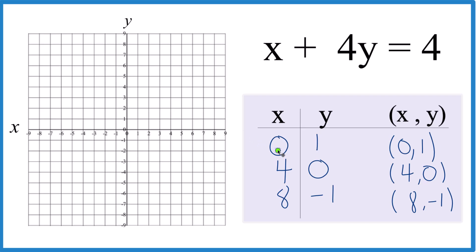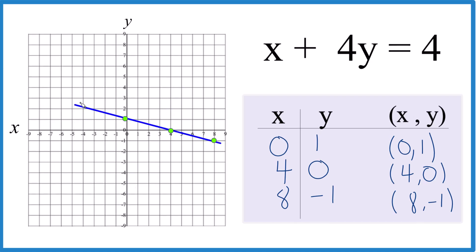We have x is zero, y is 1 right there. We have x is 4 and y is 0. There it is. And one more, x is 8 and y is negative 1 right there. You can see they line up. Let's put a line through that, and let's put arrows at the ends to show it goes to infinity. And that's the graph for x plus 4y equals 4.